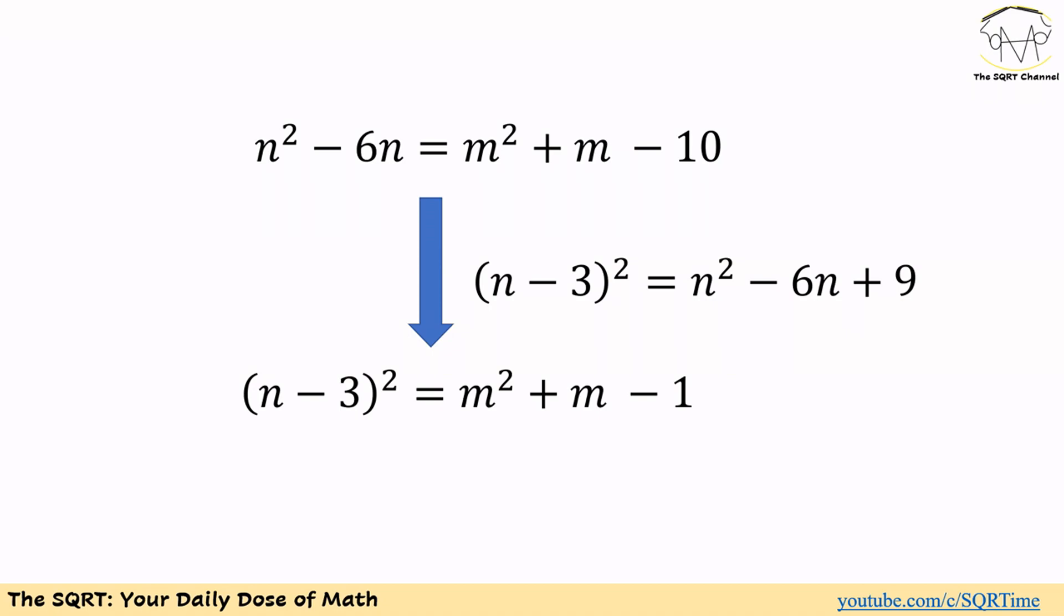To solve this problem, we are going to simplify the equation a little bit. We have n to the power of 2 minus 6n and we are going to write it as n minus 3 to the power of 2 minus 9. If we do it, then we will have n minus 3 to the power of 2 is equal to m squared plus m minus 1.